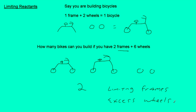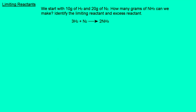This is exactly what happens in a chemical reaction. Let's say we have this reaction here. We start with 10 grams of hydrogen and 20 grams of nitrogen. How many grams of ammonia can we make? Let's identify the limiting reactant and the excess. I'm going to write down our quantities: 10 grams of hydrogen and 20 grams of nitrogen, and we're trying to figure out how many grams of ammonia we're going to make.